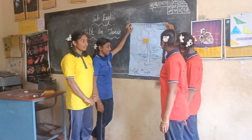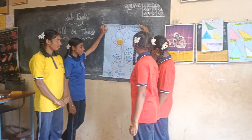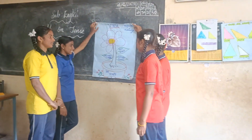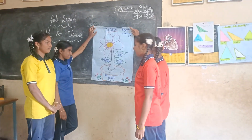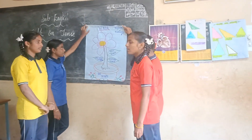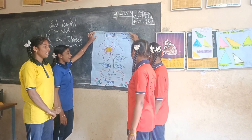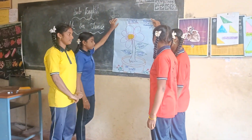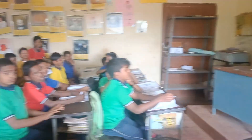What is written on the chart? The Tenses. What is written on the chart? The Tenses. Very good.